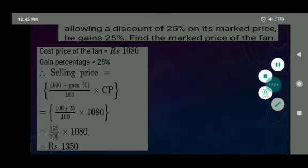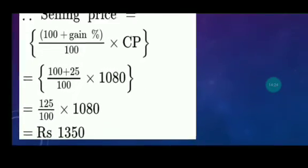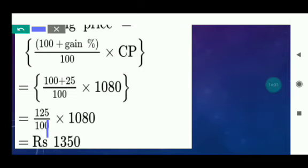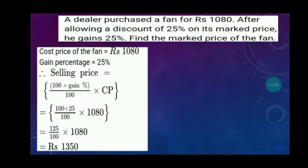Substituting values: SP = (100 + 25) / 100 × 1,080 = 125/100 × 1,080. Simplifying by cancelling common factors: SP = Rs. 1,350. So the selling price came out to be Rs. 1,350.